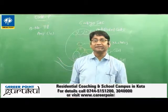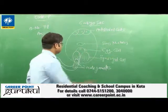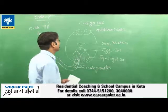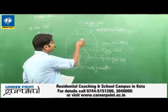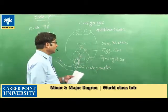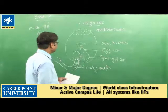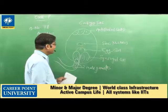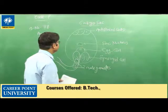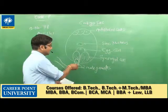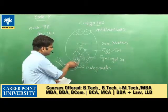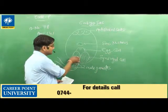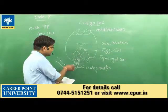The filiform apparatus are present in the synergid cells in the female gametophyte, or the embryo sac, of flowering plants. When the pollen tube grows from the stigma and reaches the ovary, then the ovule, and then the embryo sac, the pollen tube enters the embryo sac through one of the synergid cells.